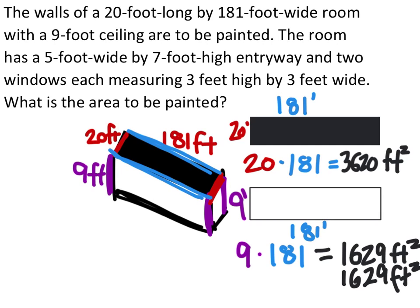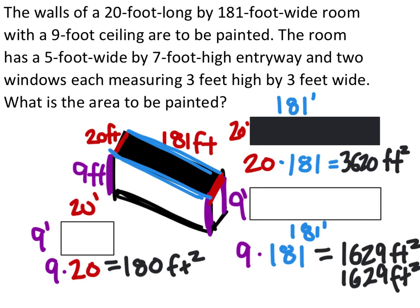So we need to look now at the smaller rectangle, which would be this side rectangle, and it is duplicated on the other side of the box as well. This rectangle is a 9 foot by 20 foot rectangle. To find the area, we're going to multiply the 9 and 20, and that gives me 180 feet squared. But remember, there's two of these, so we'll need another 180 feet squared.